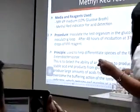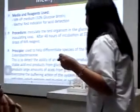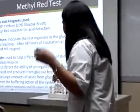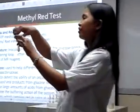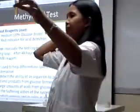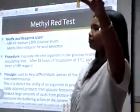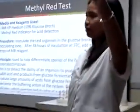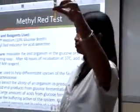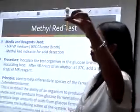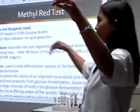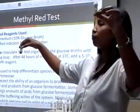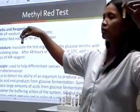For methyl red: you have your 10% glucose broth that you have inoculated and incubated. After incubation, what will you add? Your methyl red — that is your indicator.